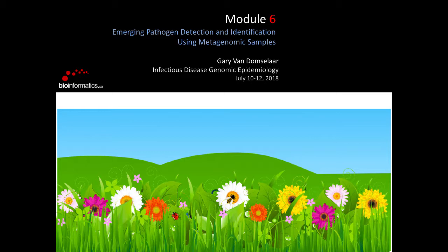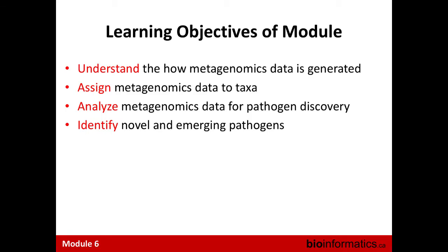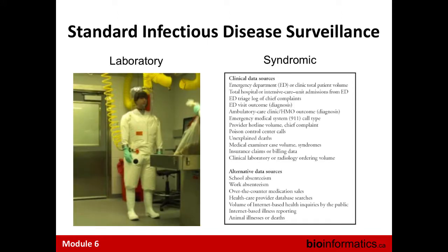Good morning everybody. I want to talk about emerging pathogen detection and the application of metagenomics for detecting novel and emerging pathogens. This is a newer technology that allows us to identify emerging pathogens without having access to a pre-existing diagnostic. The objectives of this module are to understand how metagenomics data is generated, how we assign the data to specific taxa, and how we can apply that technology for pathogen discovery to identify novel and emerging variants.